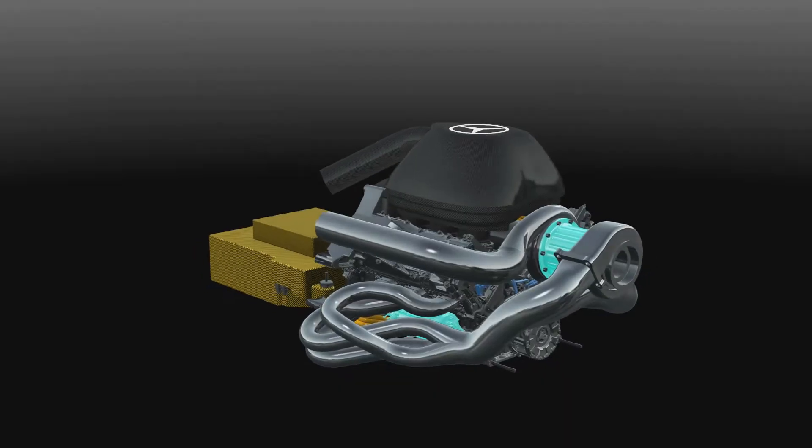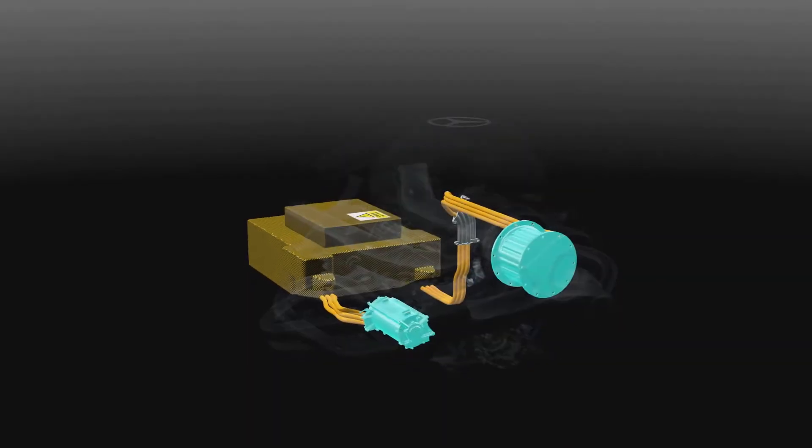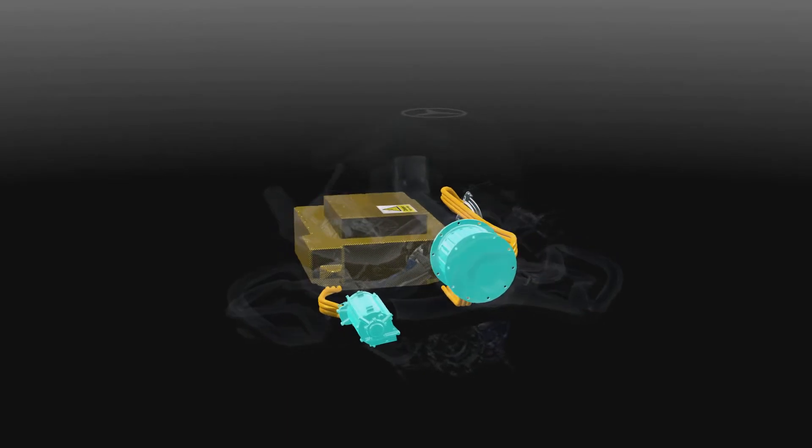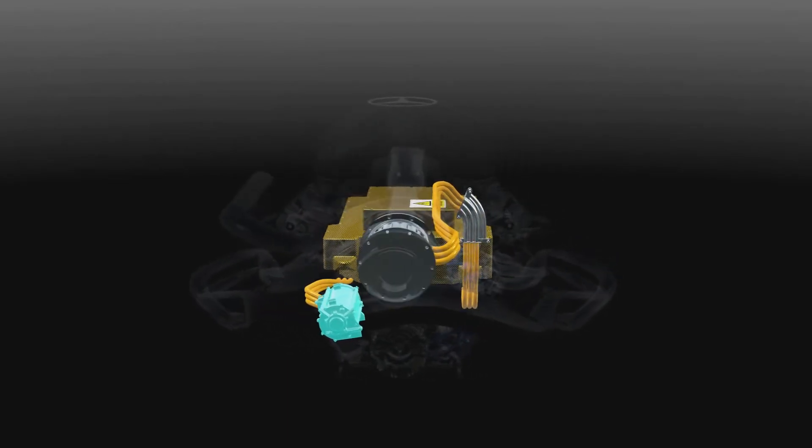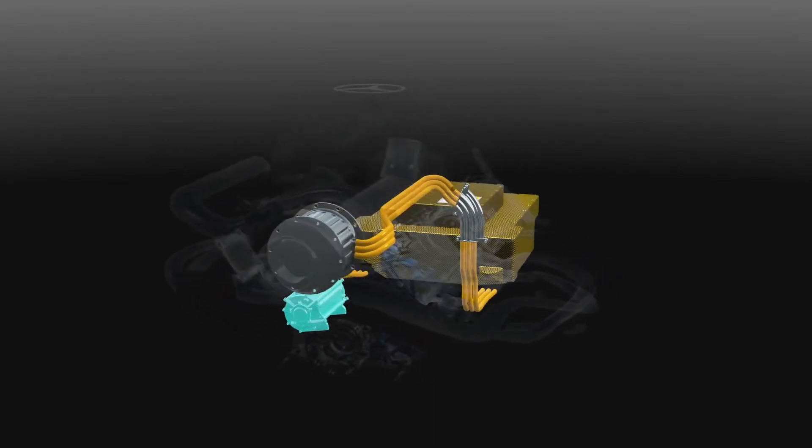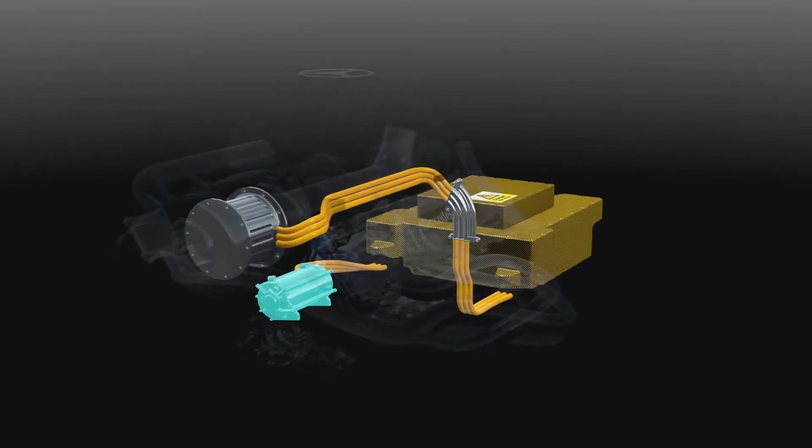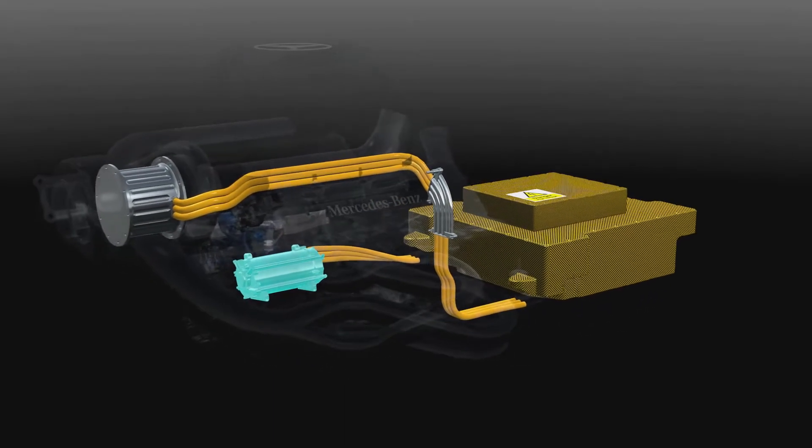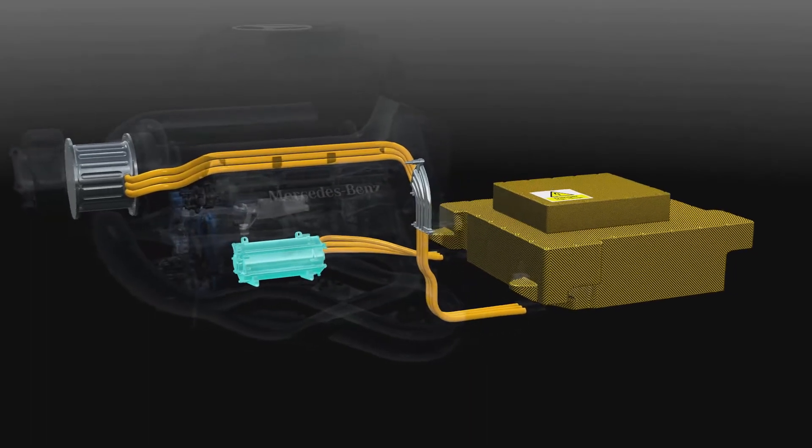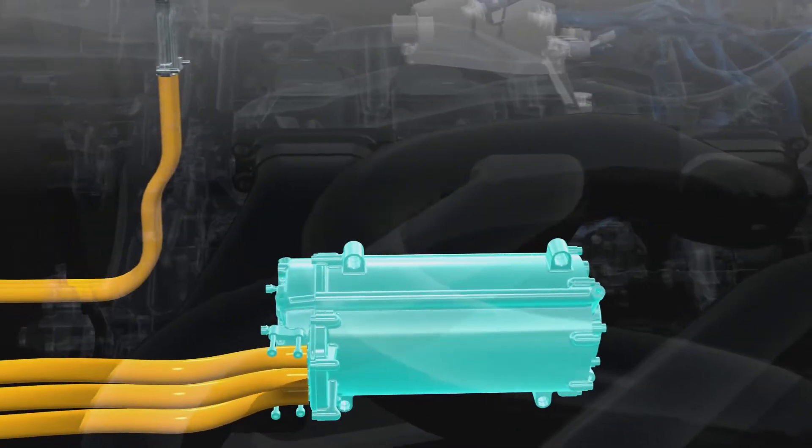The engine is boosted by a hybrid system made up of two electrical motor generators to recycle energy that would otherwise be lost. The MGU-K delivers up to 160 horsepower for 33 seconds per lap, equivalent to a Mercedes C220 CDI.